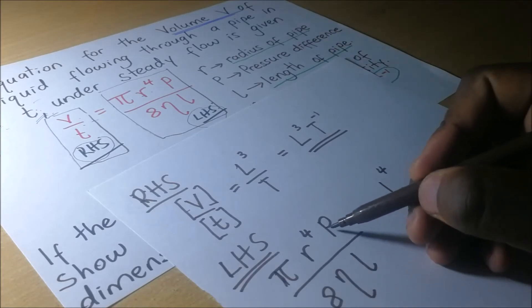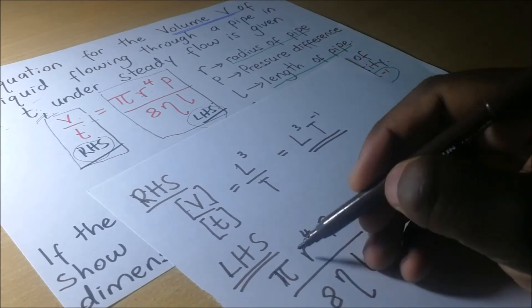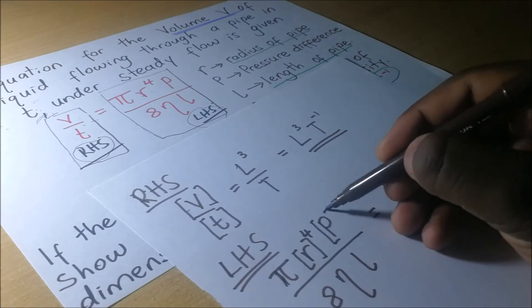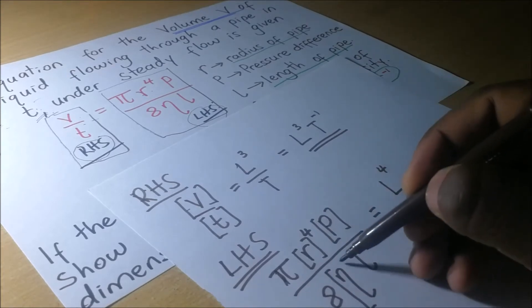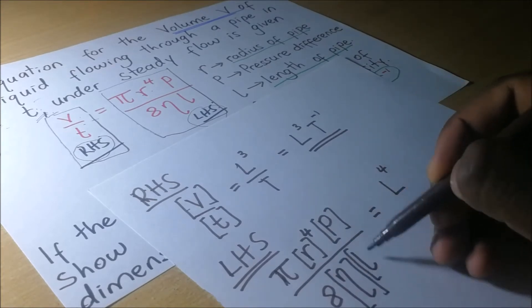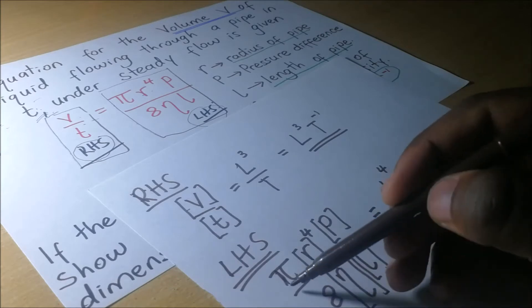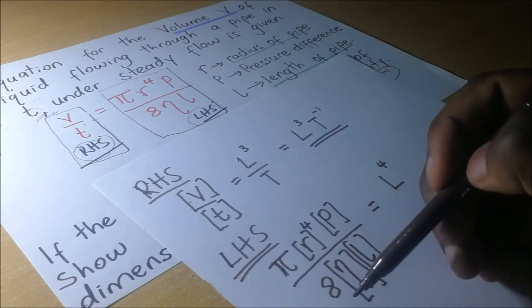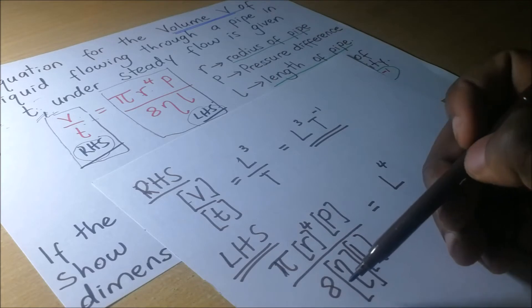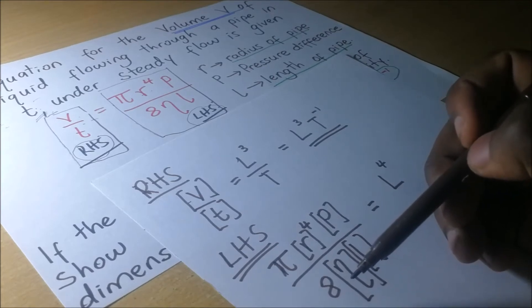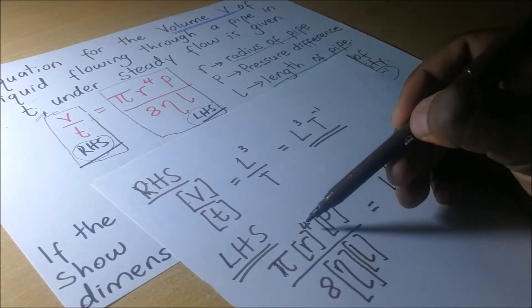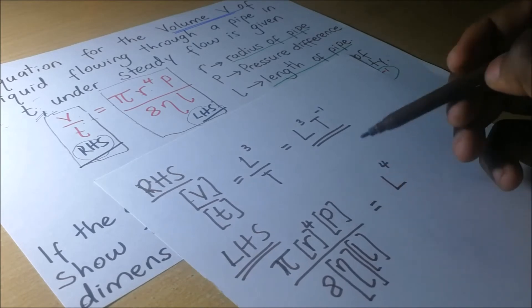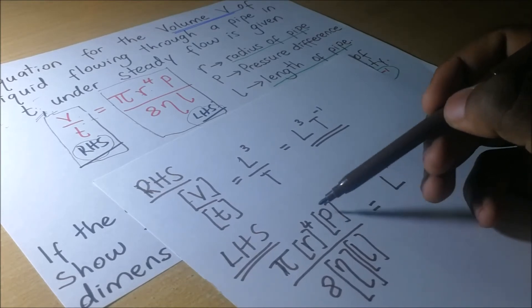What are the dimensions of pressure? We need the dimensions of R, then the dimensions of P, the dimensions of eta, and the dimensions of L. Pi is a constant — constants don't have dimensions. 8 is also a constant — constants are dimensionless. So R to the power 4, and now we need to find the dimensions of pressure.